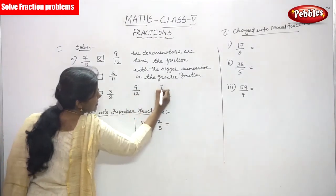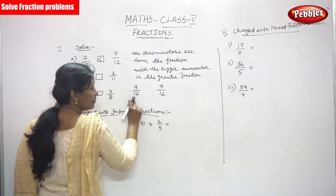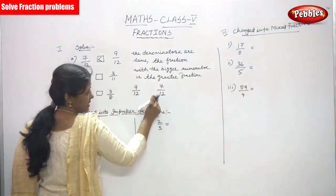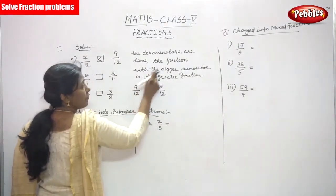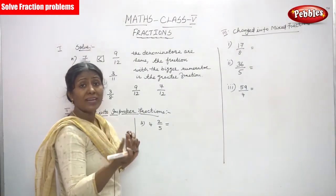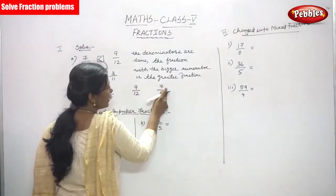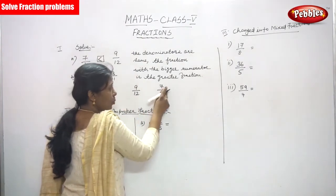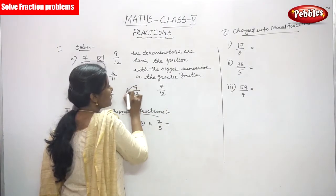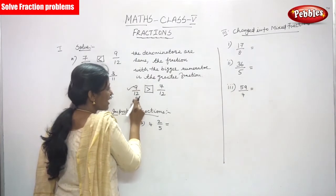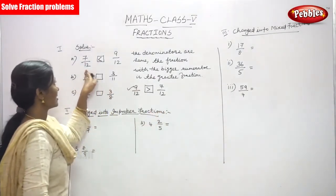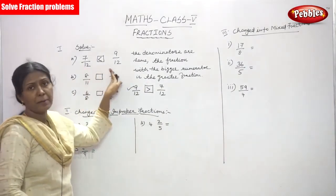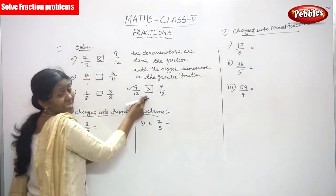If you write it the other way: 9 by 12 and 7 by 12 — look at the fractions. In both fractions the denominators are the same, so look only at the numerator. 9 and 7: the fraction with the bigger numerator, that is 9 by 12, is the greater fraction. So you put the sign: 9 by 12 is greater than 7 by 12. If 7 by 12 is given first, you write 7 by 12 is less than 9 by 12. This is the lesser sign; this is the greater sign.